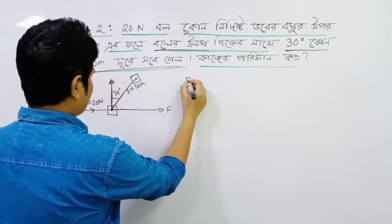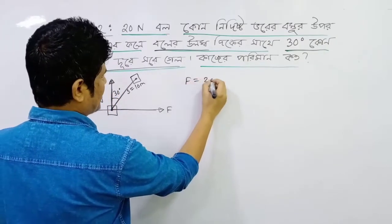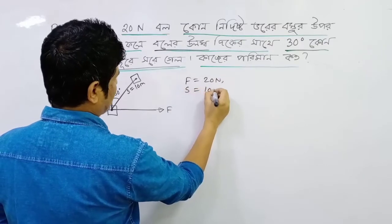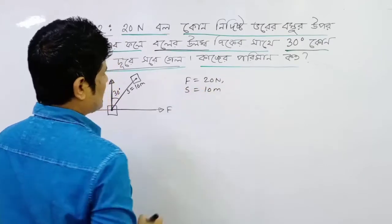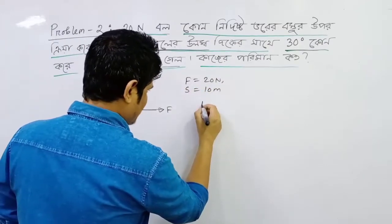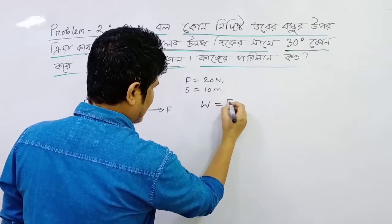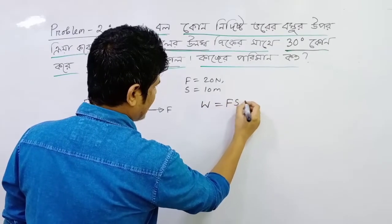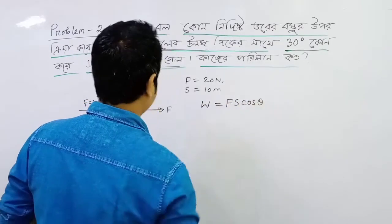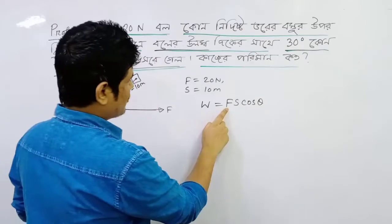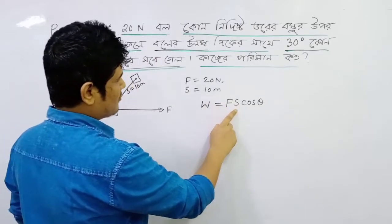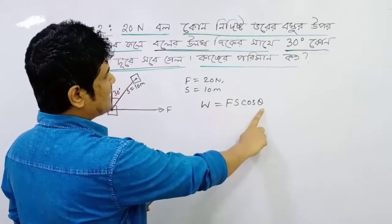This means 20 Newton and 10 meters. We know that W is equal to fs·cosθ. So F is equal to 20 Newton and s is equal to 10 meters.